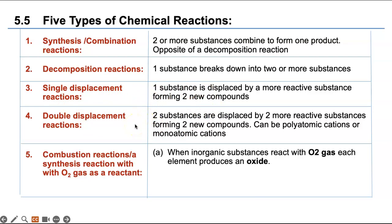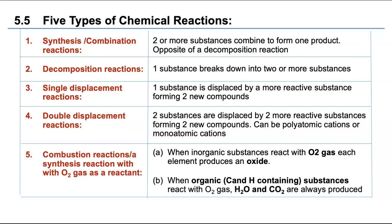In combustion reactions you can have two types. First, an inorganic substance that does not have carbon and hydrogen together burns in oxygen gas and each substance forms an oxide. Second, an organic compound with carbon and hydrogen burns, and the oxides of carbon and hydrogen — carbon dioxide and H₂O — are always produced.